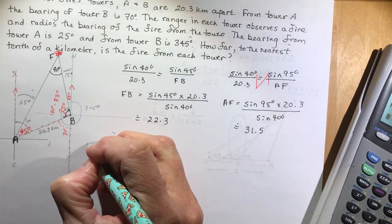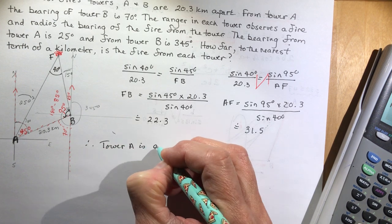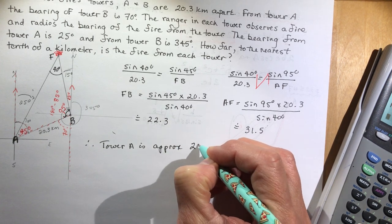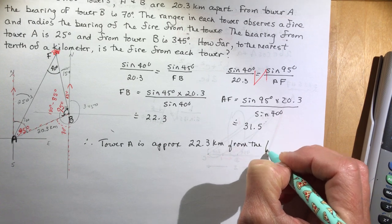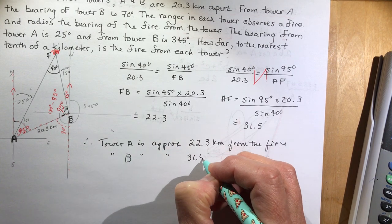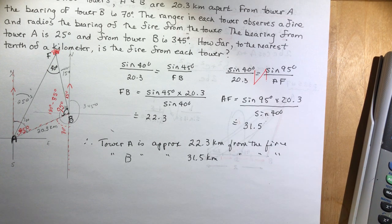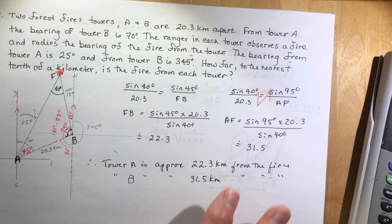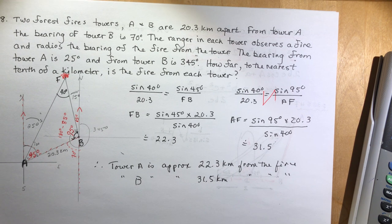Therefore tower A is approximately 31.5 kilometers from the fire, and tower B is approximately 22.3 kilometers from the fire. These are probably the trickiest questions in that section. Hopefully that helped you — give me a thumbs up, sign up, let me know people are out there watching and learning. Thanks, bye bye!